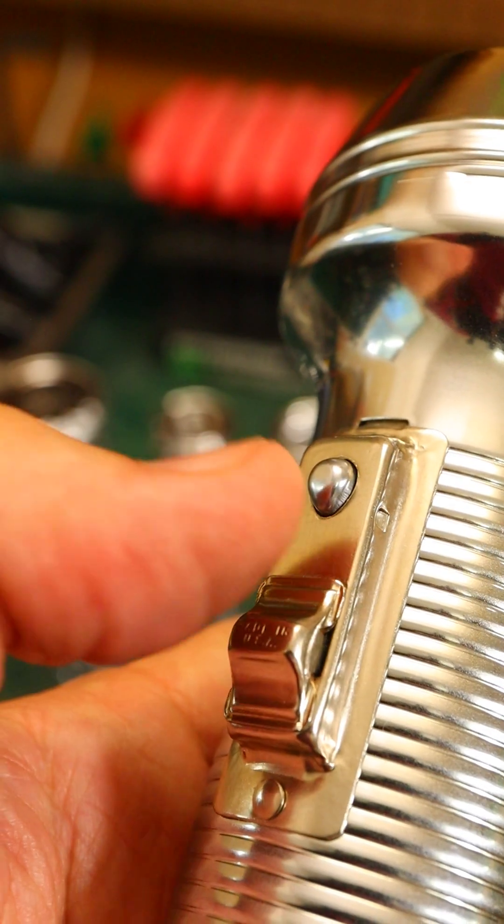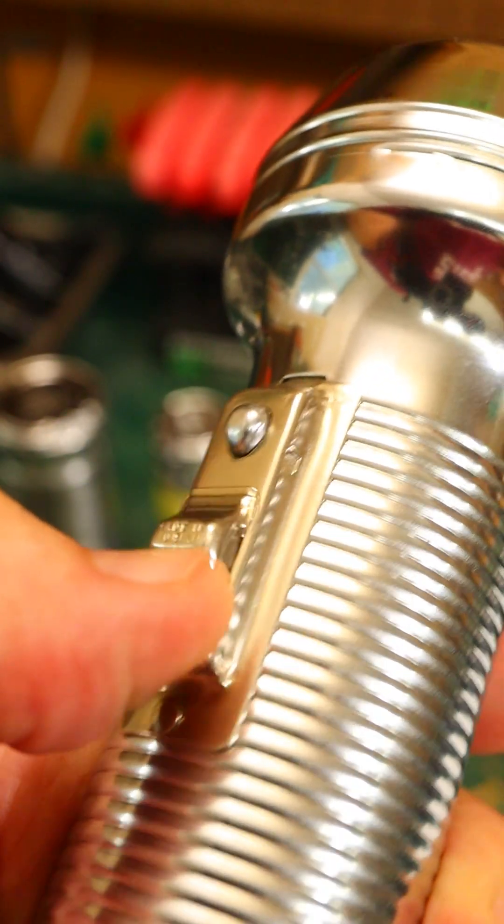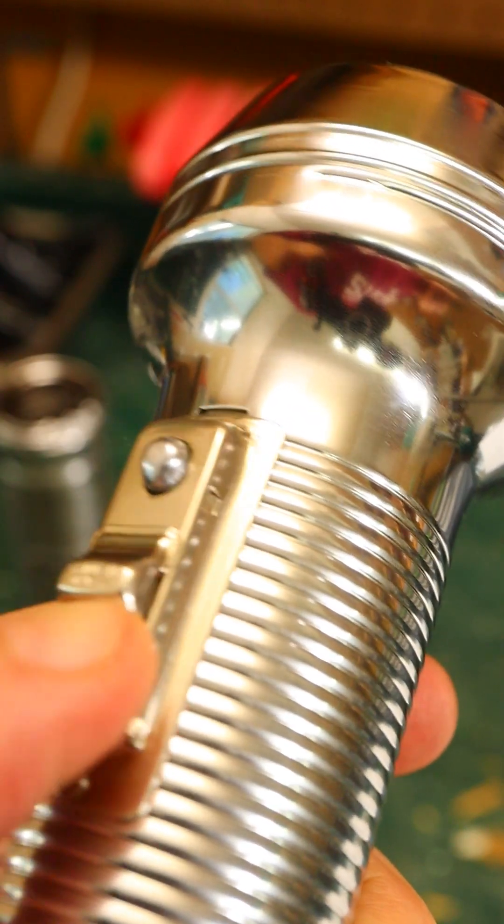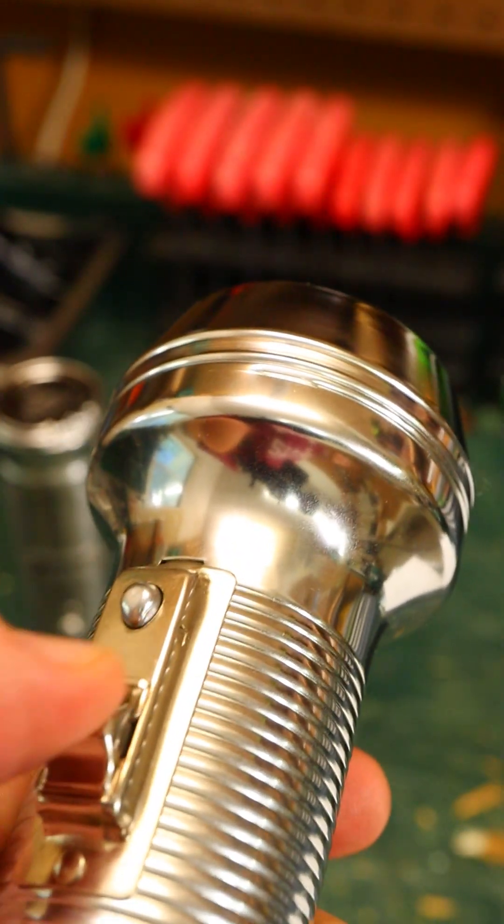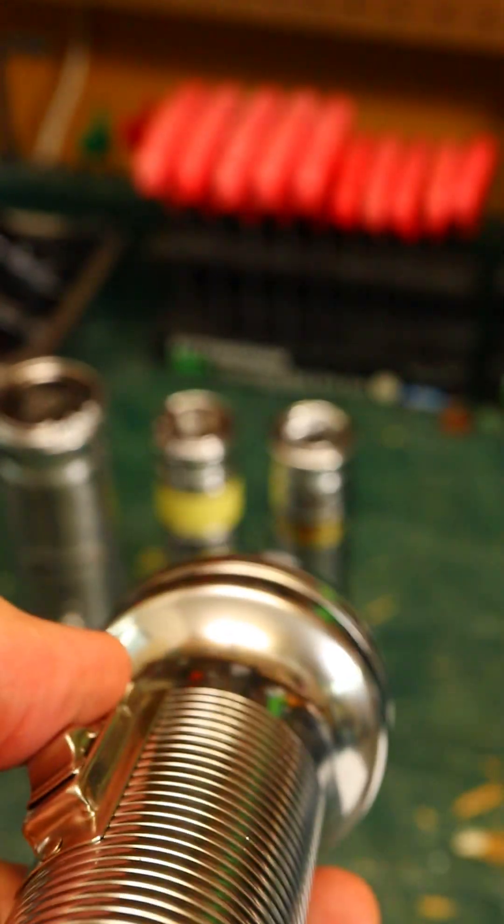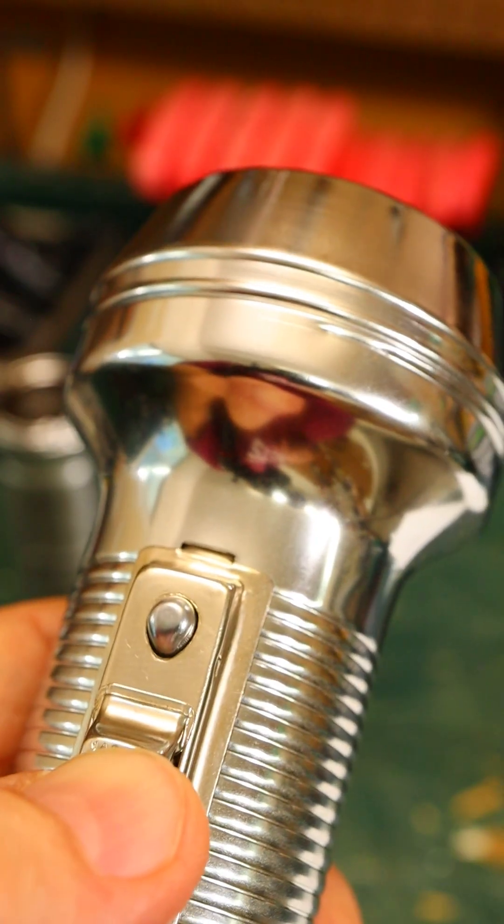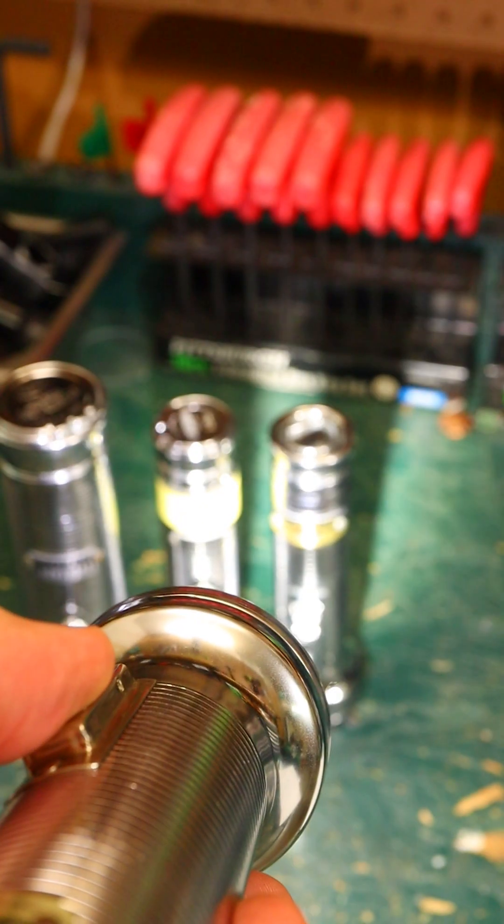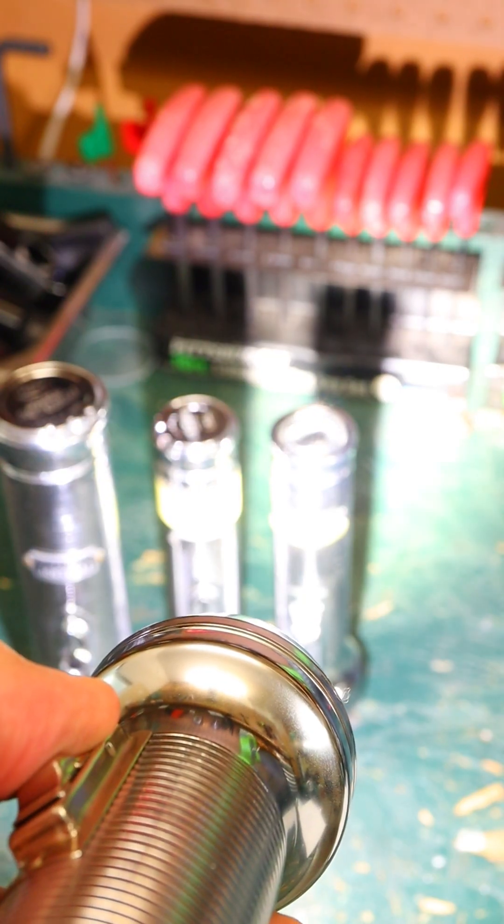Out of the two sets, I prefer the Ray-O-Vacs because of the switch style. They have a three position switch plus a momentary button. Back all the way is off, one click enables the momentary button, and all the way forward is locked on. I program the drivers to be two mode, low and high, and it's plenty easy to switch between them.